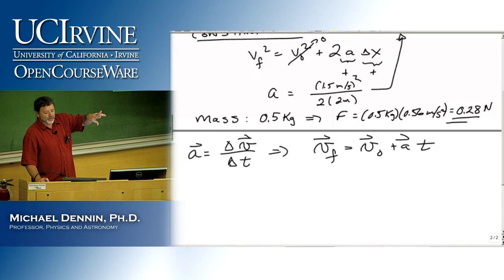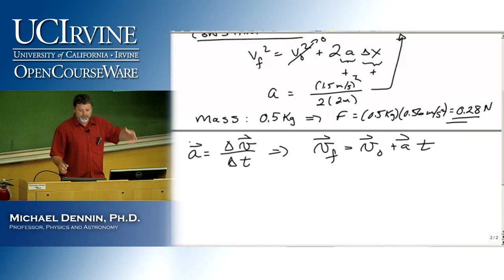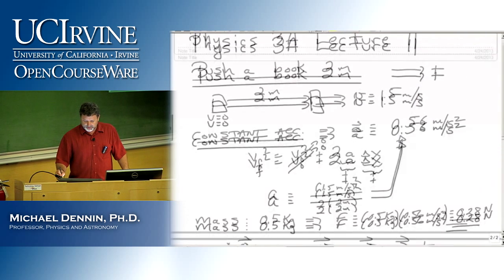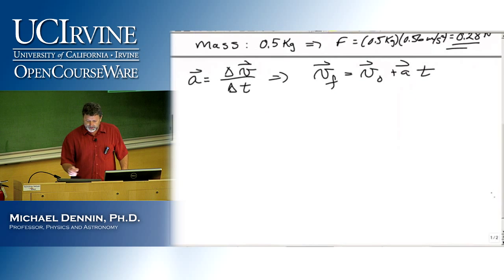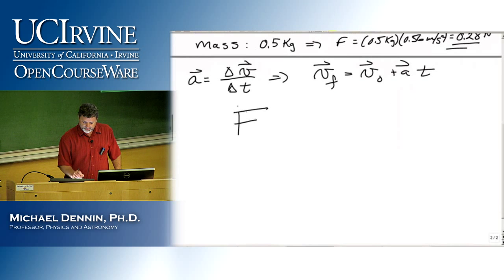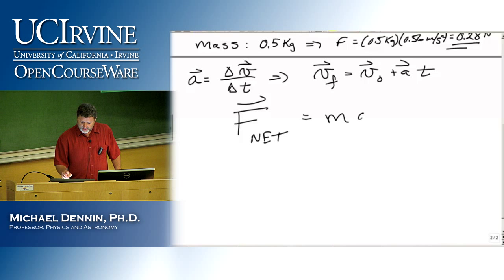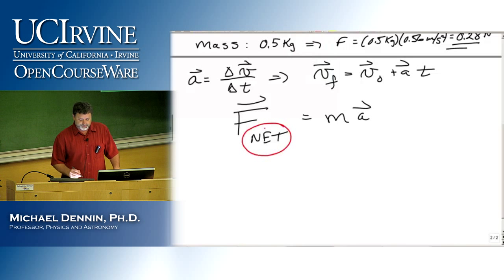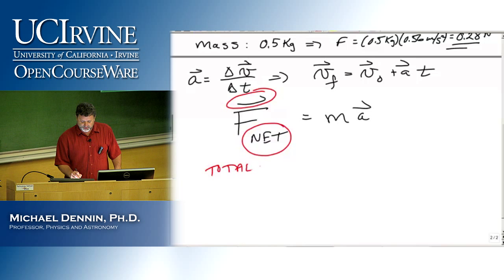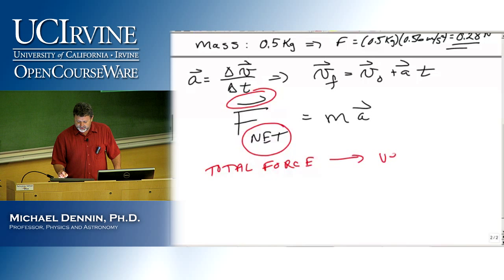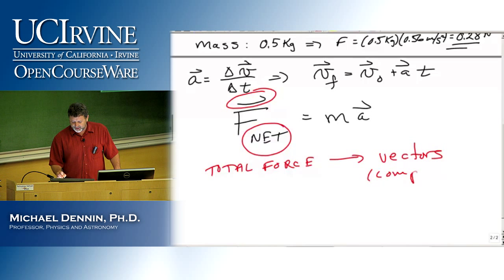That's the second law — it tells us what happens. The second law has two features we have to focus on: it's about the total force, and they are vectors. So we worry about the total force — we have to add everything up — and they're vectors, so we have to add them as vectors, which usually means looking at the components.